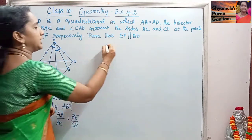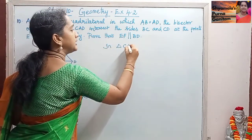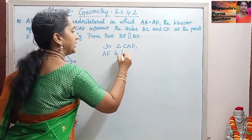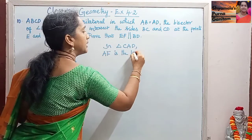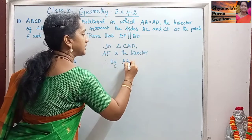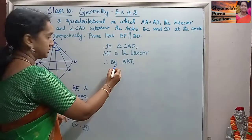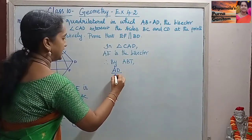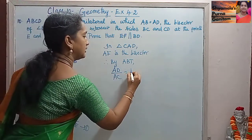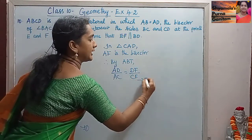The same thing we will do for the other side also. In triangle CAD, AF is the bisector. Therefore, by the Angle Bisector Theorem, AD by AC is equal to DF by CF. We will take this as the second equation.